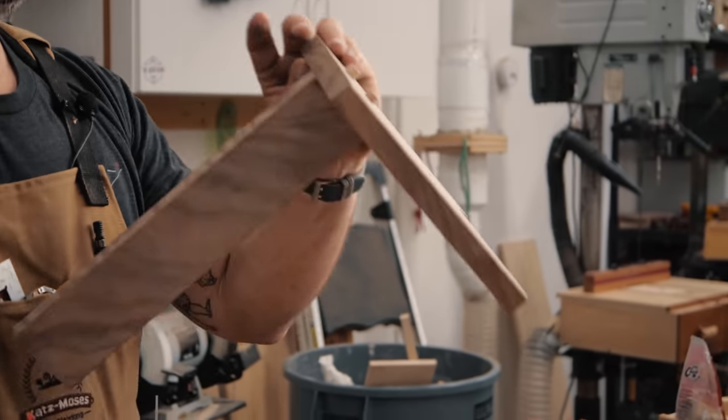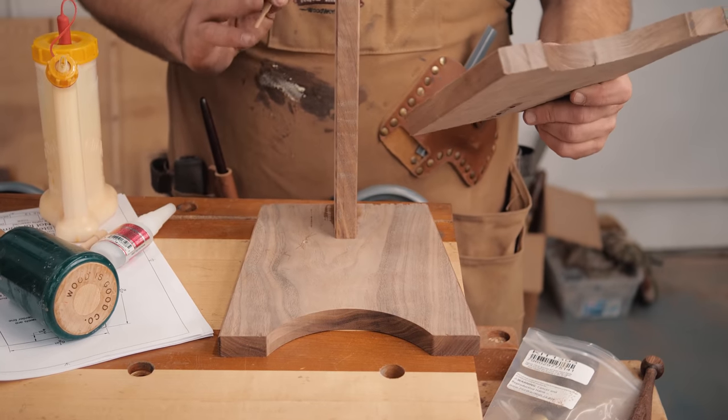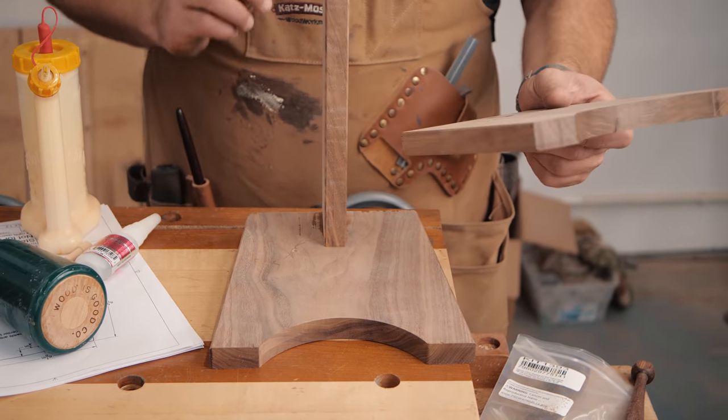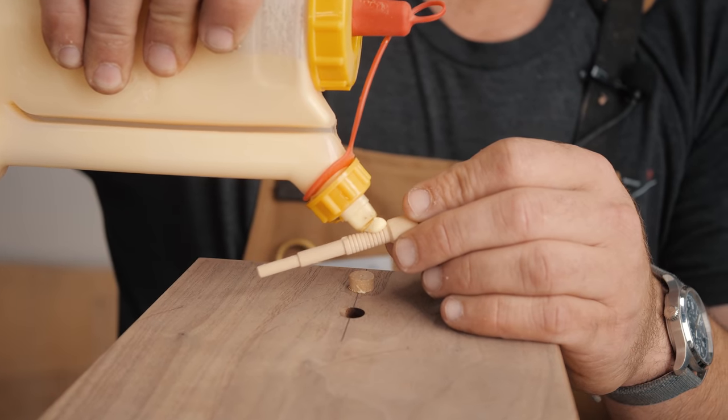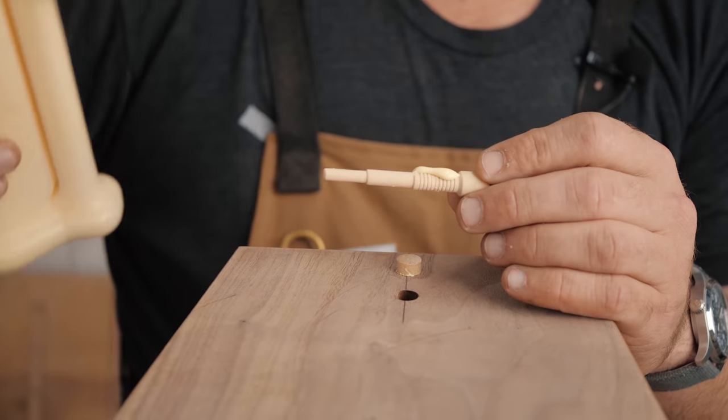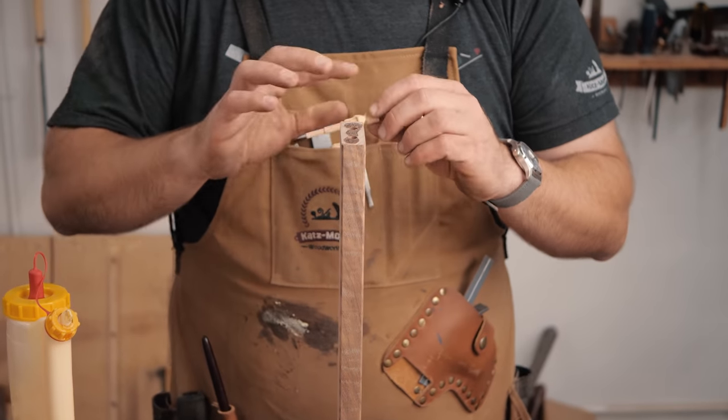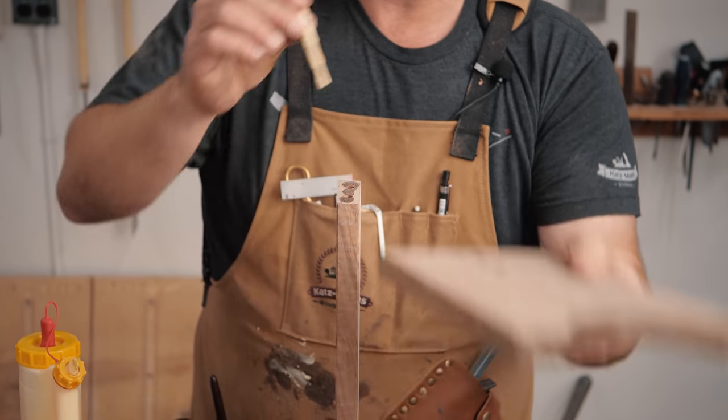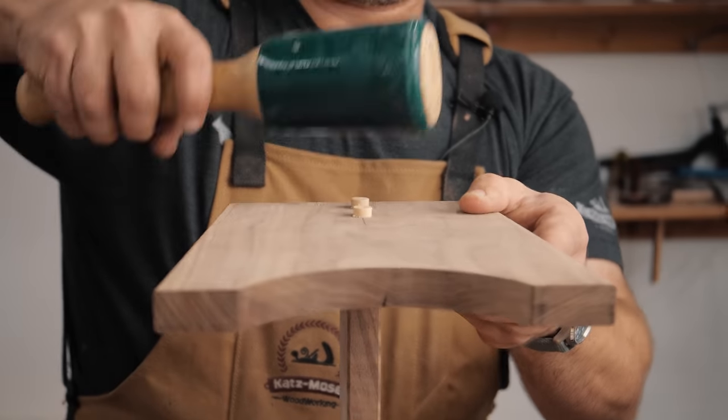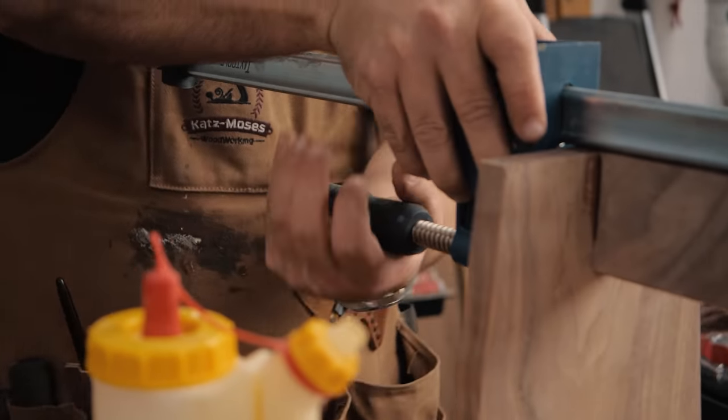You notice my super glue came off, which is fine, because we just needed that super glue for alignment. One of the things to know about these is you want to use a very light amount of glue, because just like any joinery, glue kind of thickens things up, so you don't want to get into a scenario where the glue is causing you not to be able to get these to fit.